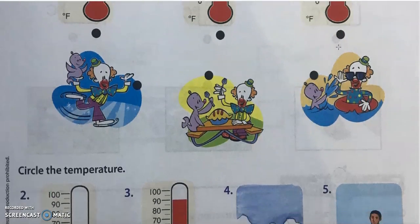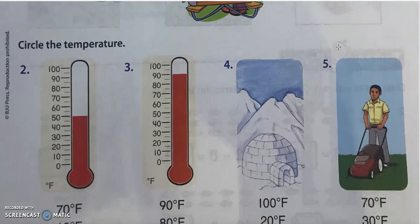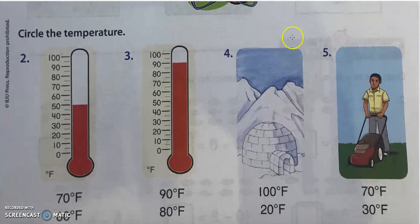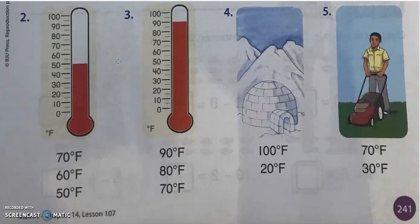Moving on to the second part of this page, you need to circle the temperature. Just look at the thermometer and where is the line? It's right at 50. Let's go ahead and circle 50 degrees Fahrenheit. What about number three? It's right at 90, go ahead and circle 90 degrees Fahrenheit.